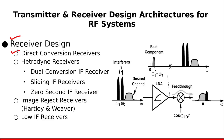First, we are going to discuss direct conversion receivers and why, despite their simplicity, these receivers are rarely deployed. Then we are going to discuss heterodyne receivers, which are the most widely deployed receiver type. We will also discuss dual conversion IF receivers, a subtype of heterodyne receivers used for applications requiring high sensitivity — for example, communicating with a satellite in outer space. After that, we discuss sliding IF receivers.